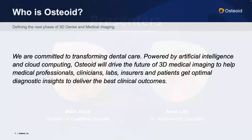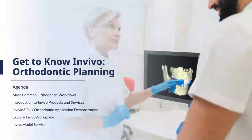Here at Osteoid, we are a pioneer 3D imaging software company mainly specializing in dentistry. Our 3D imaging software, in vivo, was created in 2004 under the company name Anatomage, which I'm sure most of you are familiar with. In vivo has become the standard in the 3D dental imaging world for the last 15-plus years. For today, we're going to specifically focus on how we fully support orthodontic planning. I'm going to hand it off to Anna so she can go through today's agenda as well as an overview of our products.